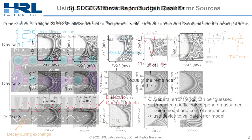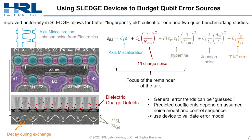So how do we use this to budget our error and understand our error sources better? First we need to write down the error model. For randomized benchmarking, there are several things that you might guess: axis miscalibration, 1/f charge noise, or hyperfine dephasing. There are some more exotic things that you might speculate on, such as Johnson noise from our room temperature electronics or this novel T1J mechanism.